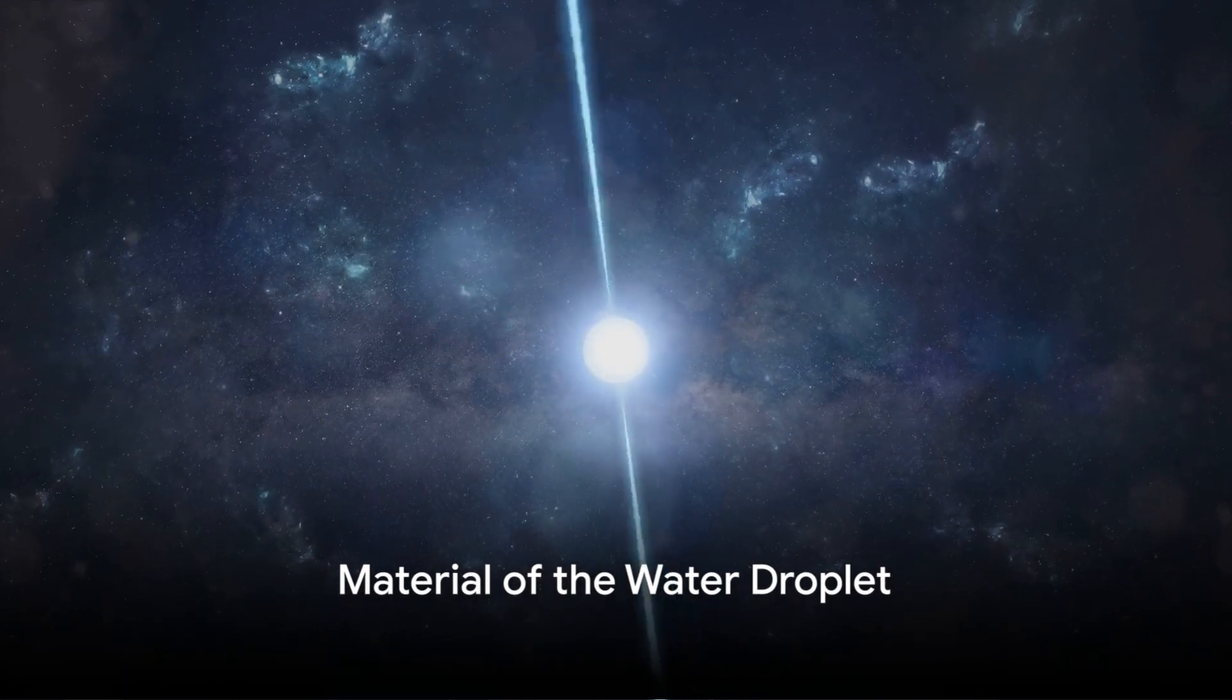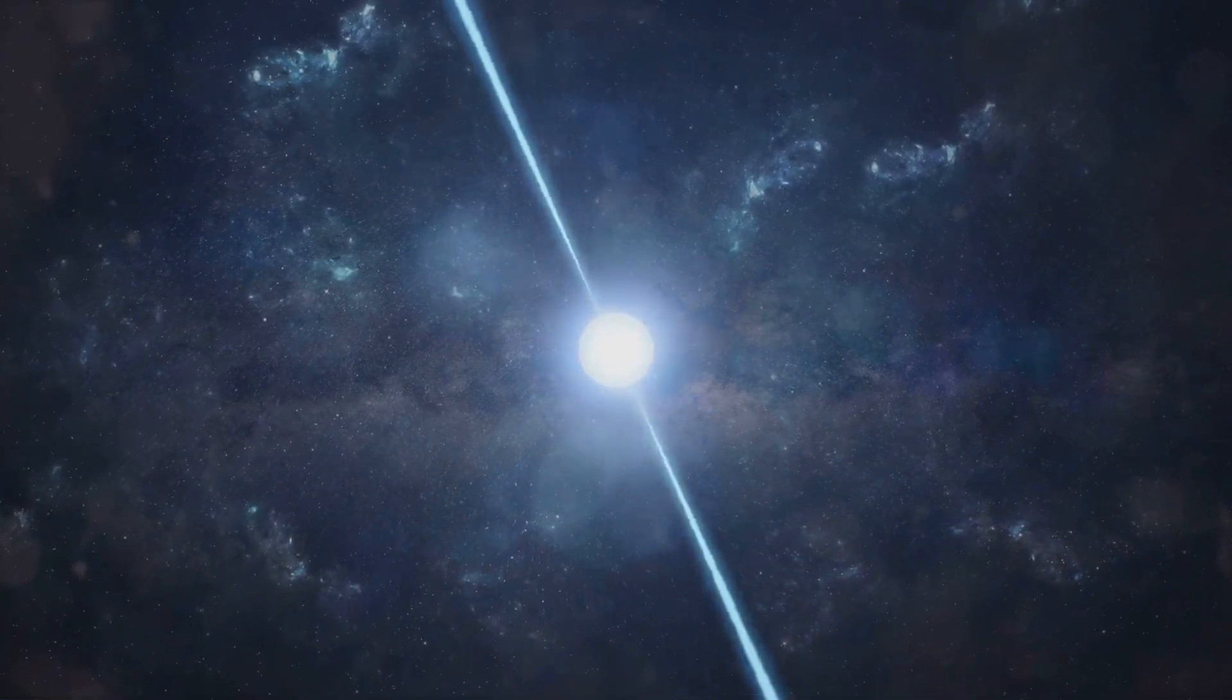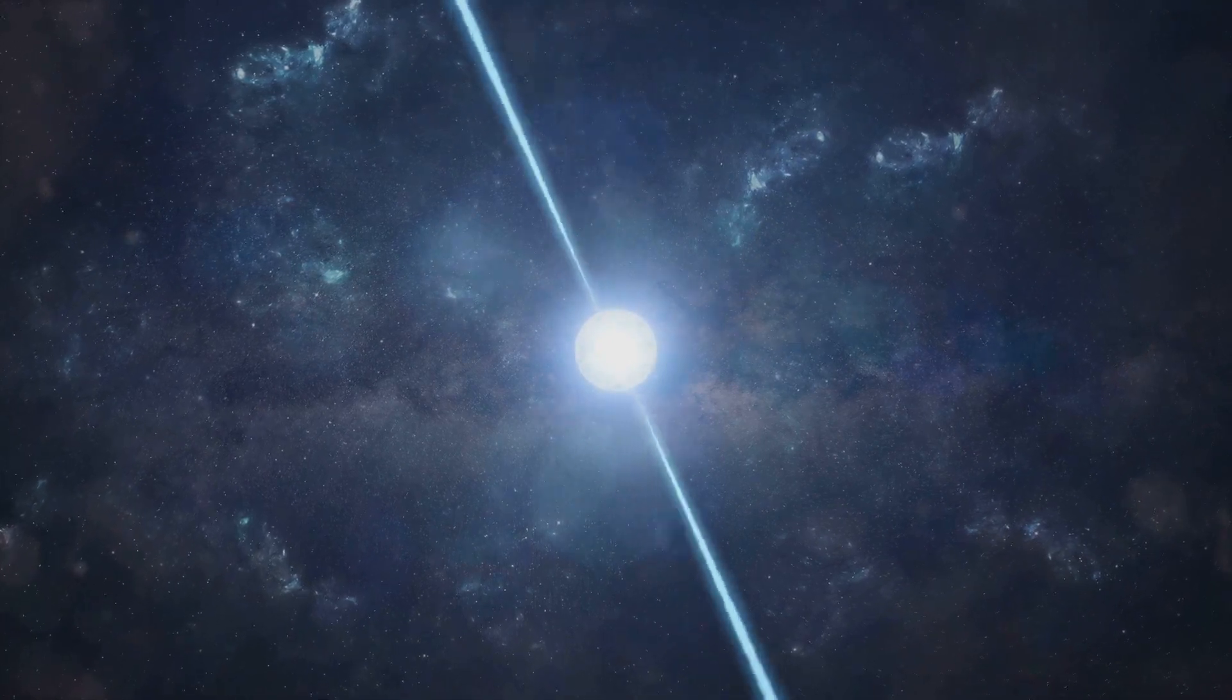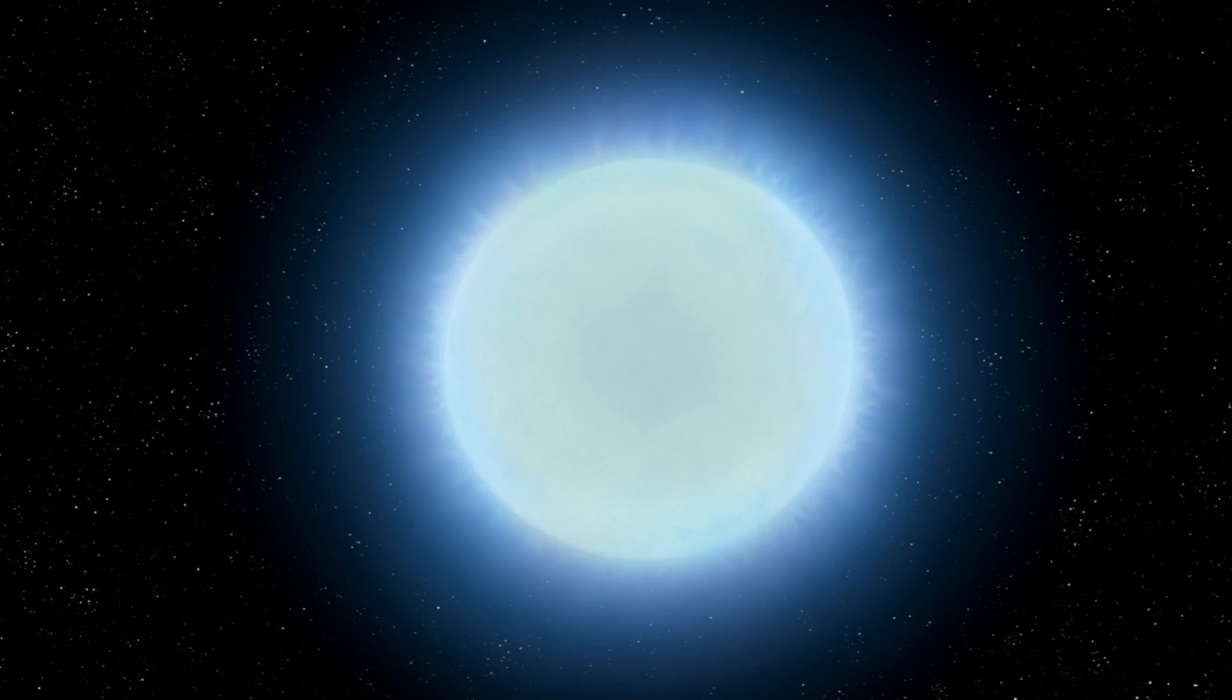The material used to create the water droplet in the novel is a neutron star, whose surface is absolutely smooth, to the extent that the height of the neutron star's peaks can reach at most one millimeter, beyond which its own mass would crush it.